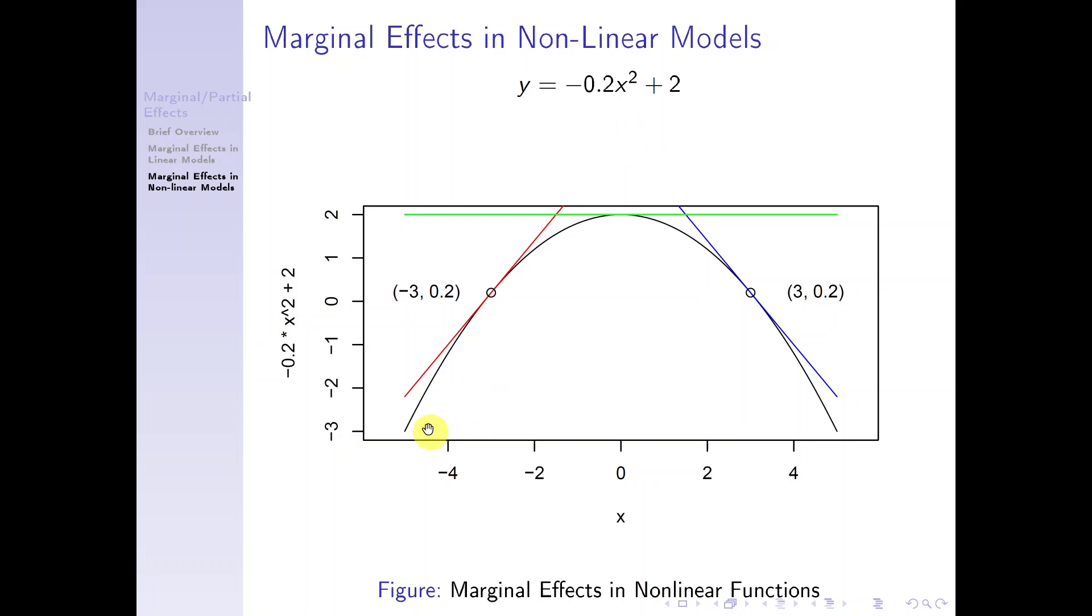So here I graph this function here, and I pick different point on the curve, corresponding to different values of x. Then I also graph the marginal effects. So here, let's look at this point here, this point, negative 3, point 2.